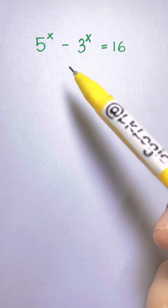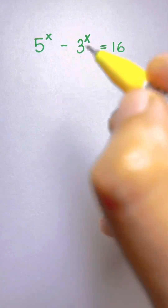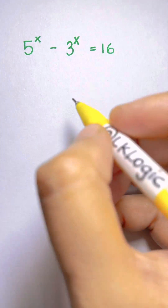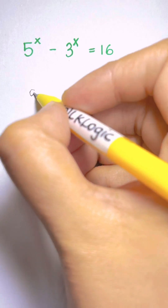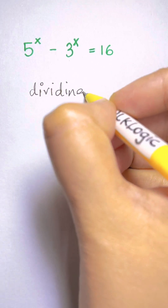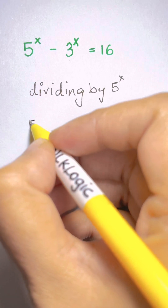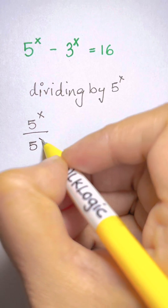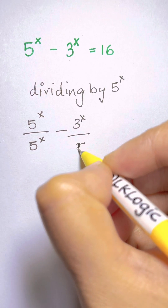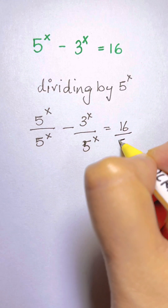So how can we approach that? Let's do a little manipulation. Let's start by dividing both the left-hand side and the right-hand side by 5 to the power of x. So we get 5^x divided by 5^x, minus 3^x divided by 5^x, equals 16 over 5^x.